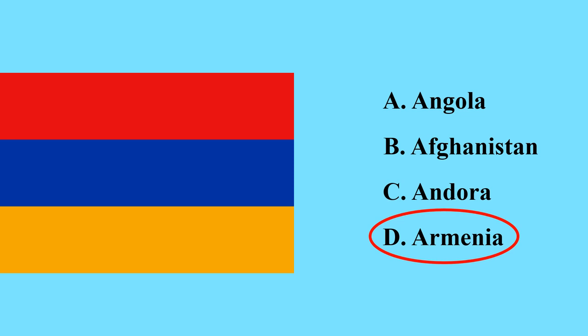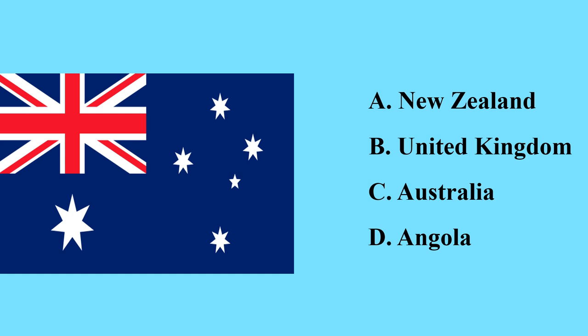This flag is a flag of Armenia. Armenia is a country in Asia, though culturally it is also considered a European country. This is a flag of Australia — Australia is the largest country in Oceania; it is the largest island continent.